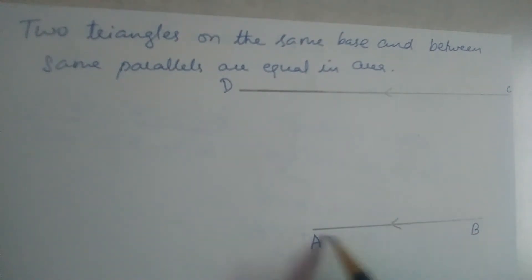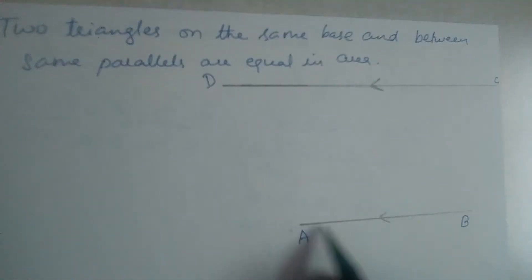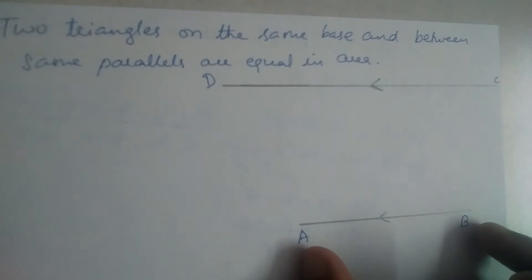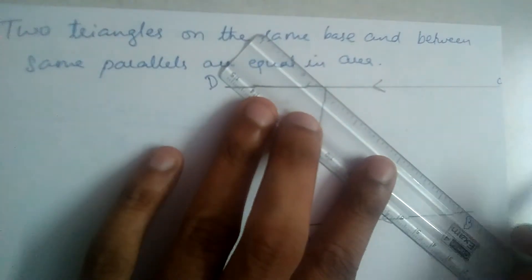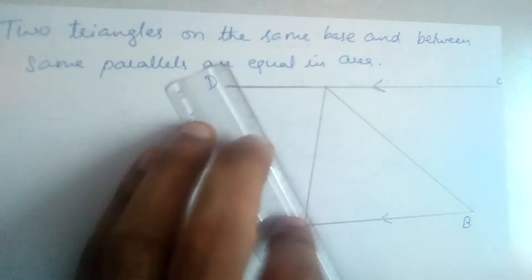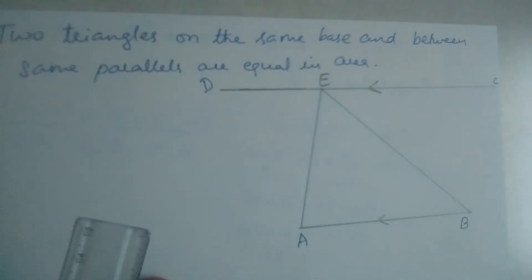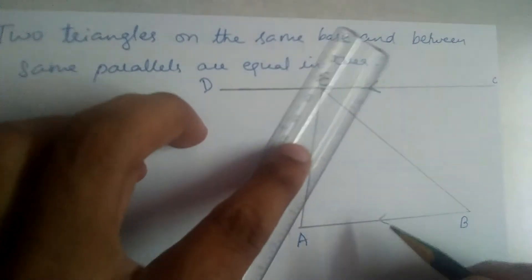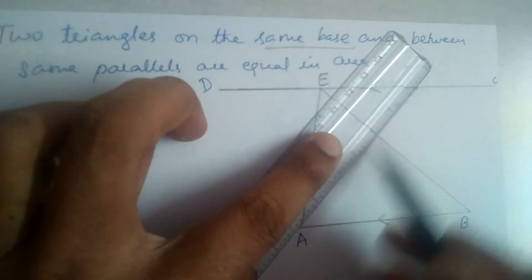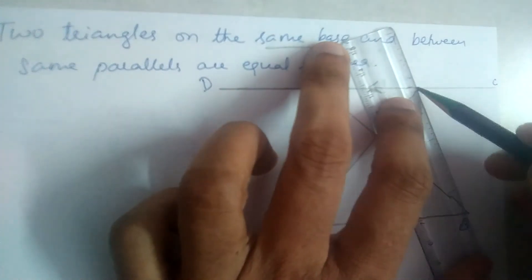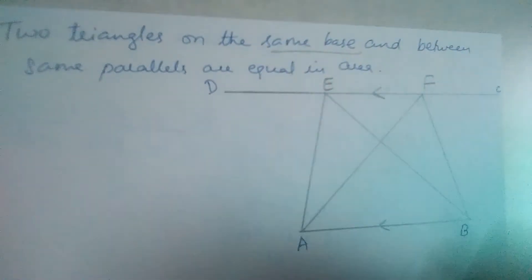We have two parallel lines AB and DC. Now let us construct two triangles taking AB as base. This is one triangle — let the points be A, B, C, D, E. We should construct one more triangle with the same base. Let this second triangle's apex be F.